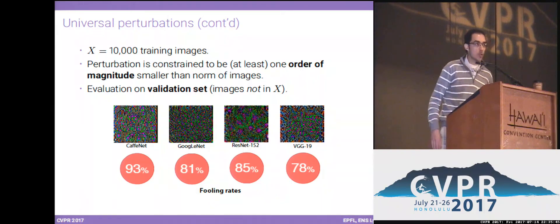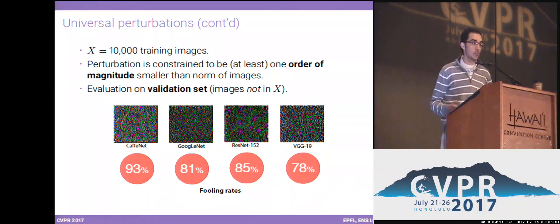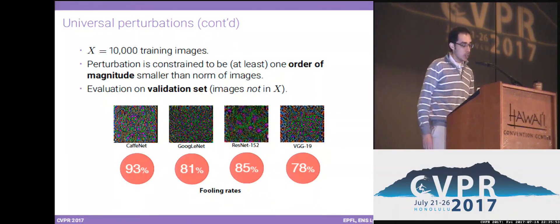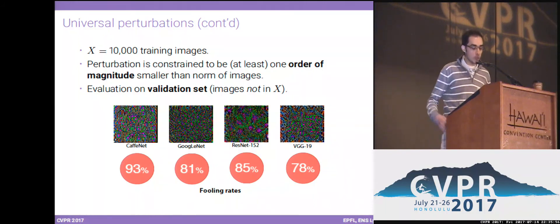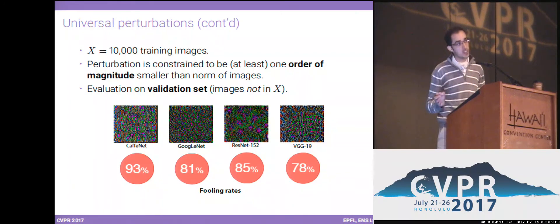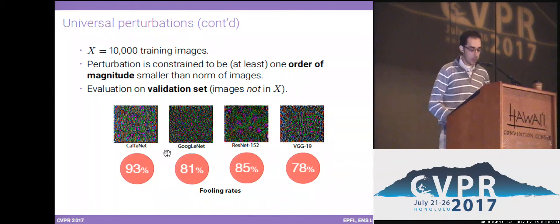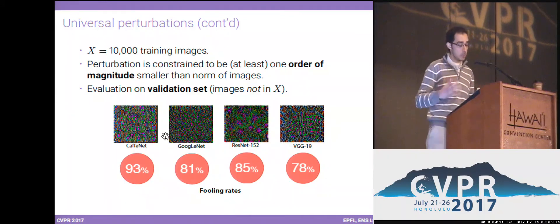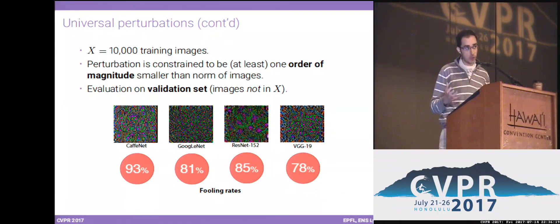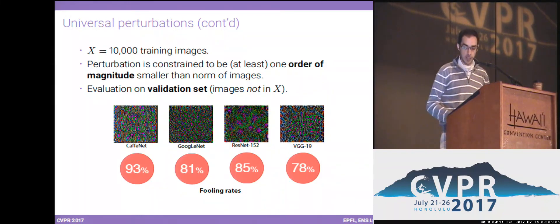We tried this algorithm on a subset of 10,000 training images from ImageNet, constraining the perturbation to be one order of magnitude smaller than the norm of the images. We then evaluated the perturbation on a validation set — images not seen during training. The resulting perturbations are very structured, and the fooling rates show that we can fool most images in the validation set. The rates we can achieve are actually pretty high.